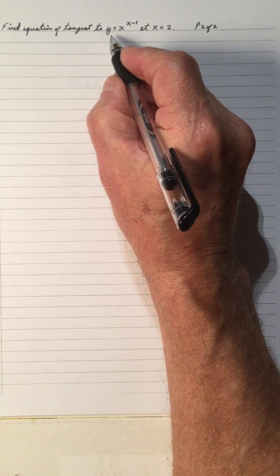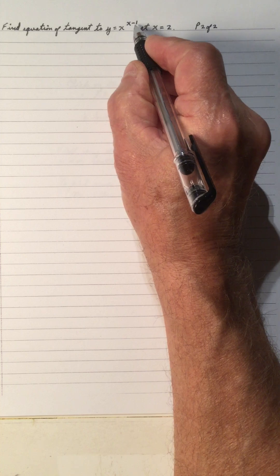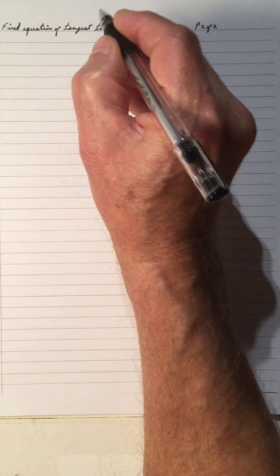Find the equation of the tangent to y equals x raised to the x minus 1 at x equals 2. Again, notice that x is in the exponent, so I will do the log of each side. Or before I do that,